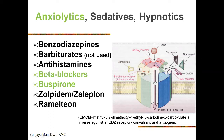The GABA-A receptor plays a central role in sedatives, hypnotics, and anxiolytics. GABA has two receptor types: GABA-A and GABA-B. GABA-A is a pentameric receptor with five subunits. Barbiturates and benzodiazepines bind at different sites on this receptor. Flumazenil is the antagonist of benzodiazepines, acting at the same receptor. Beta-carbolines (e.g., DMCM) are inverse agonists at the benzodiazepine receptor and can cause convulsions and anxiety.